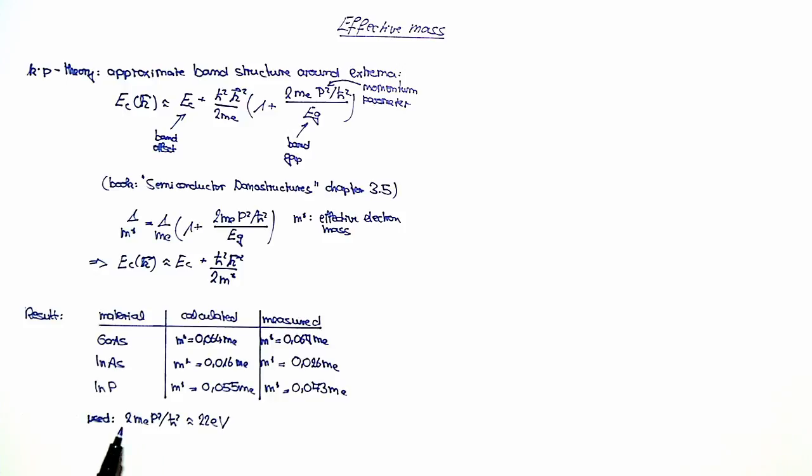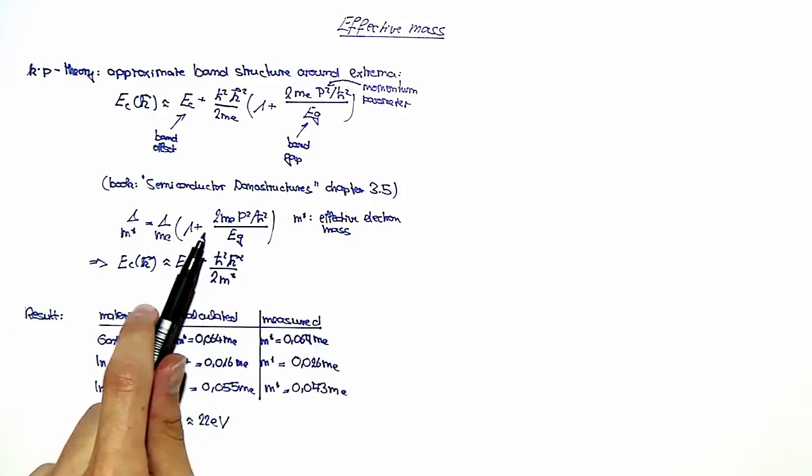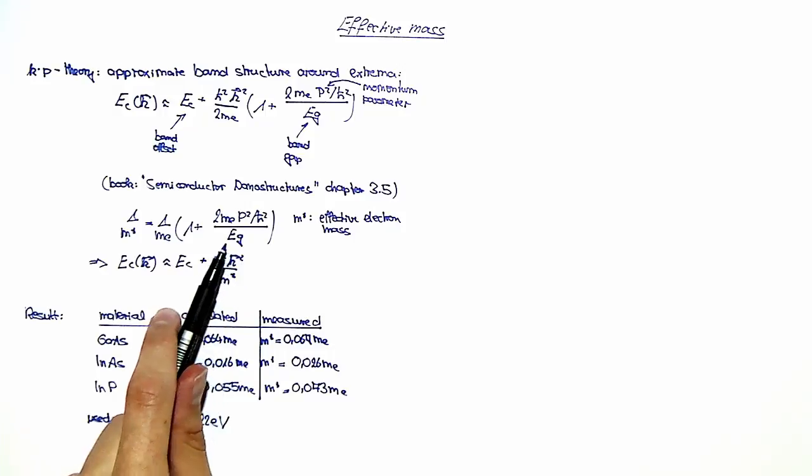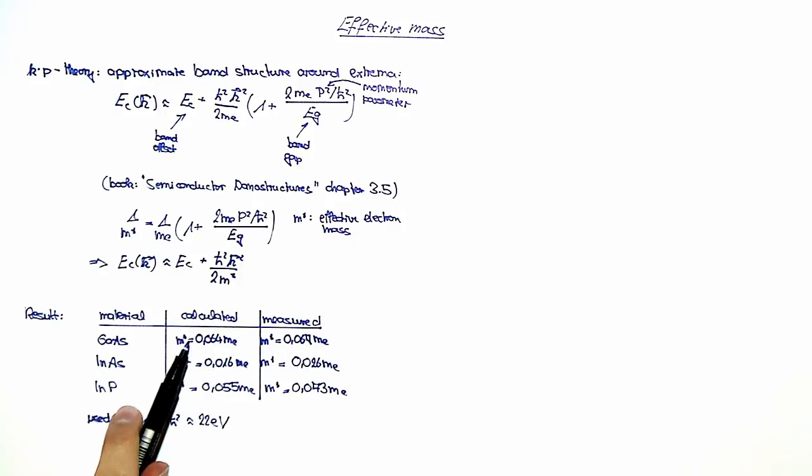As we always used the same value for this expression here, basically the effective electron mass will only depend on the band gap, which you can see here in this equation. So the effective masses directly resemble the band gap of these semiconducting materials.